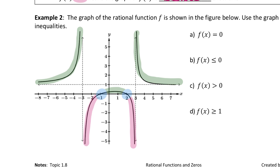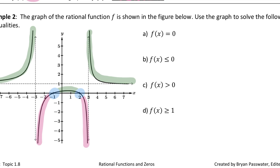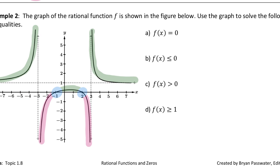When the question asks for where f(x) = 0, the answer is x = -1 and x = 2 — that's a list of numbers, not coordinates, so no parentheses.